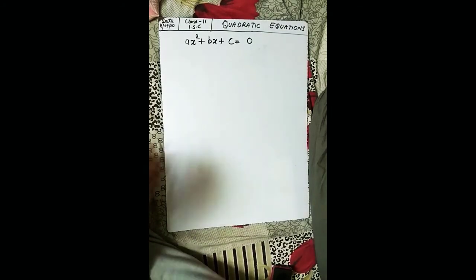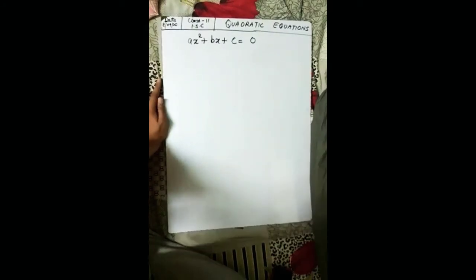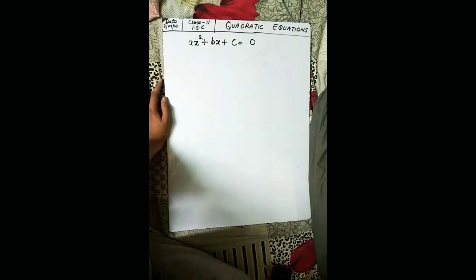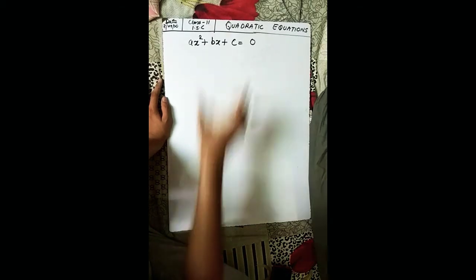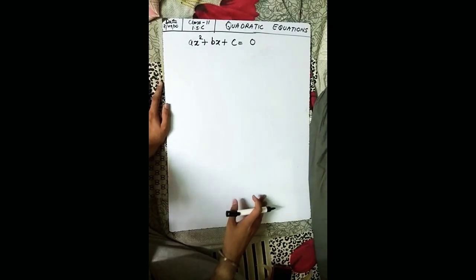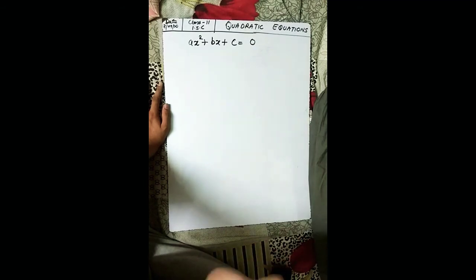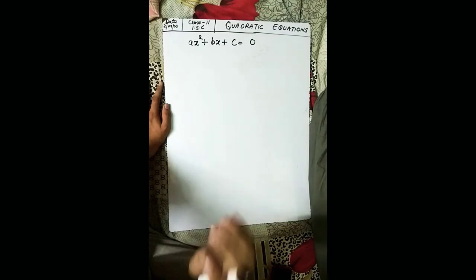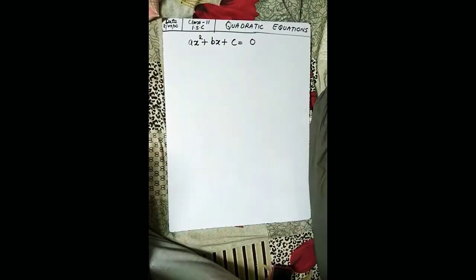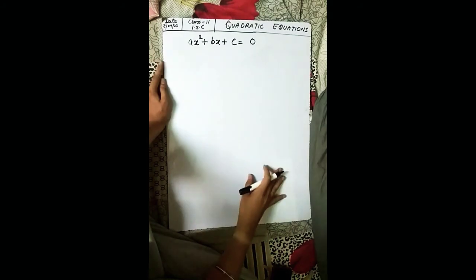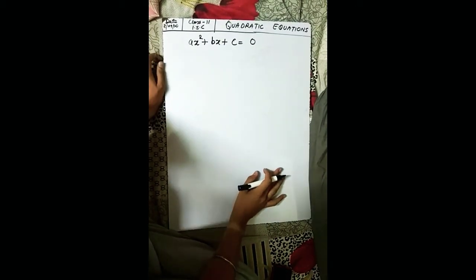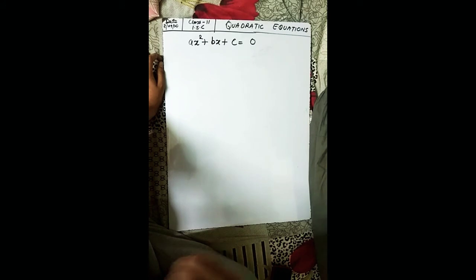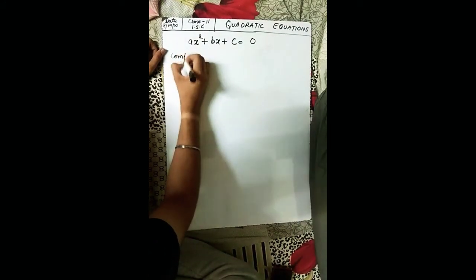Now here is the proof. We are going to prove x = (−b ± √(b² − 4ac)) / 2a from the general form of the quadratic equation. The proof is really amazing. We start with ax² + bx + c, and I am going to teach you the method by which this formula is derived — it is called the completing the square method.